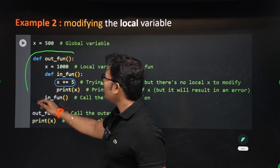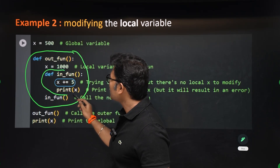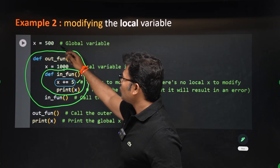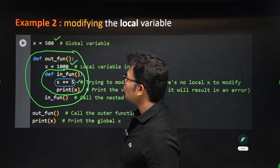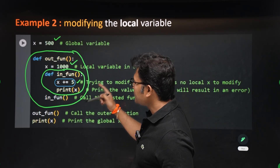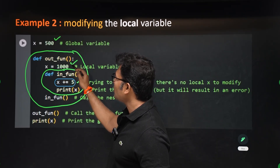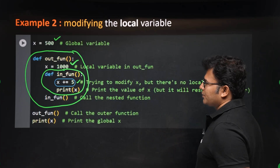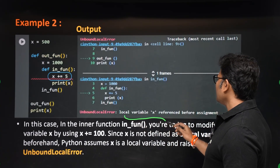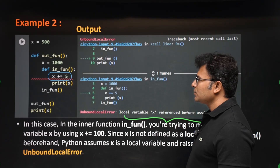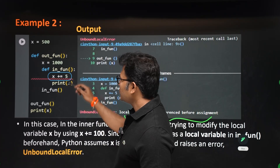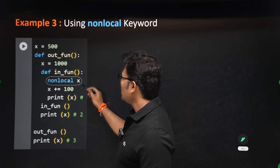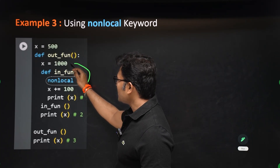In this outer function there is an inner function trying to change the value of x. There is a global x, an enclosing x, and no local x. If you want to specifically modify the closest enclosing x, you use the non-local keyword. Without it, you get 'local variable x referenced before assignment' error, because Python treats it as a local variable.